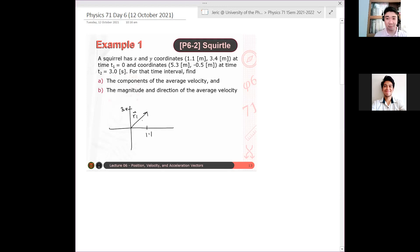Then the squirrel travels until it reaches 5.3 minus 0.5. So something here. Again, this is not figure drawn to scale. So something here.